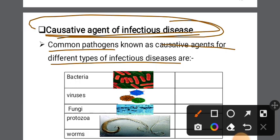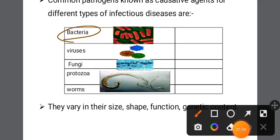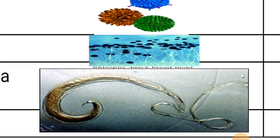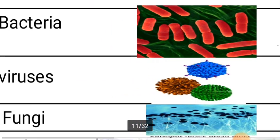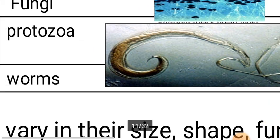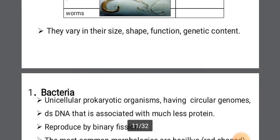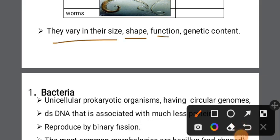The common pathogens and causative agents of infectious disease include bacteria, virus, protozoans, worms, and fungi. We will look at the size, shape, and genetic content of each: bacteria, virus, protozoans, worms, and fungi.